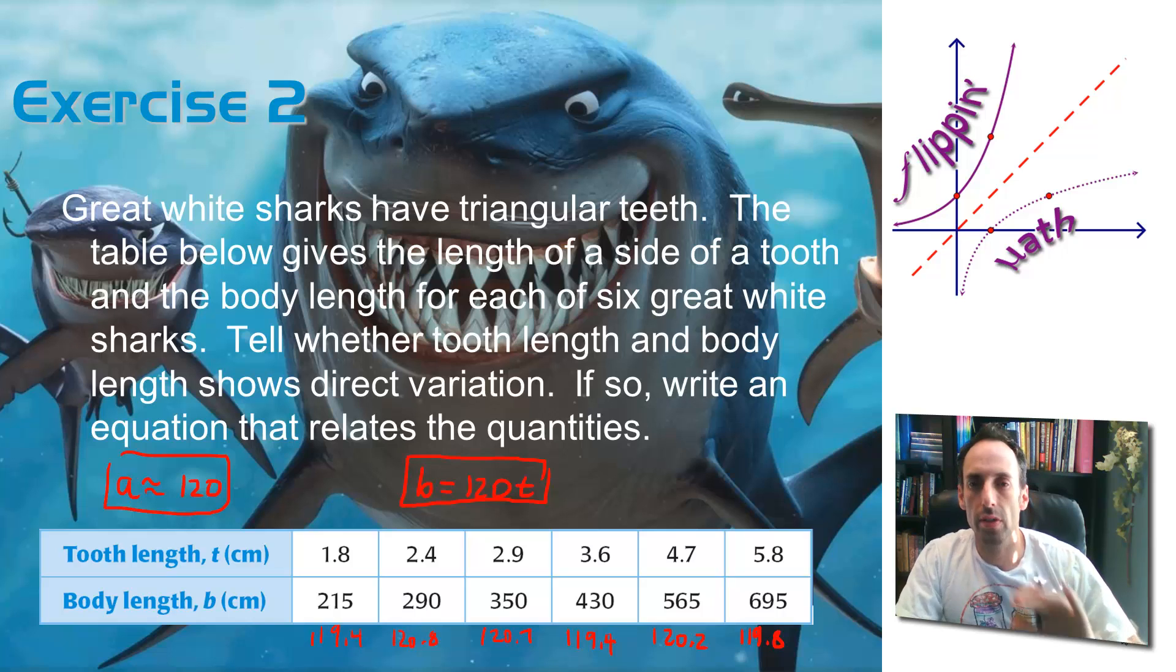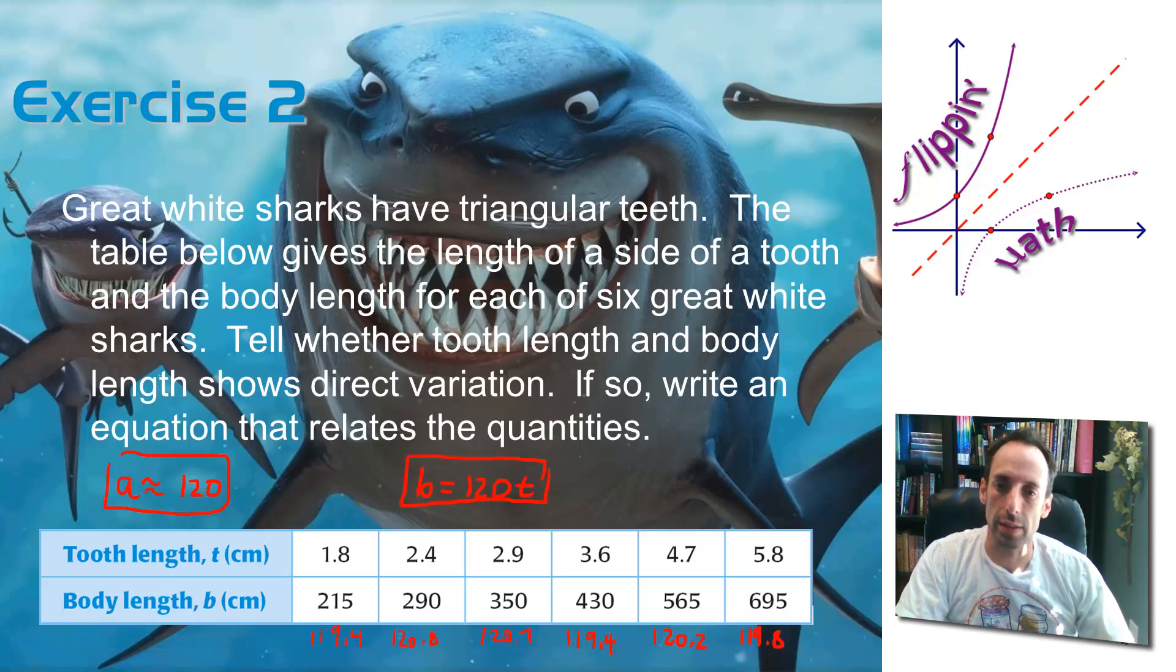So we're going to say that this has approximate direct variation with a constant of variation of 120. So if I'm going to write this equation, the body length of a shark is equal to 120 times the length of its tooth. There you go. All right.